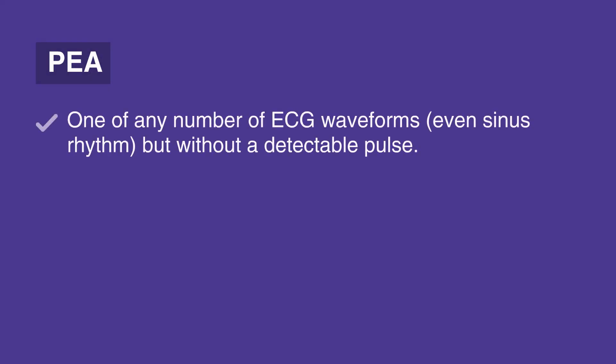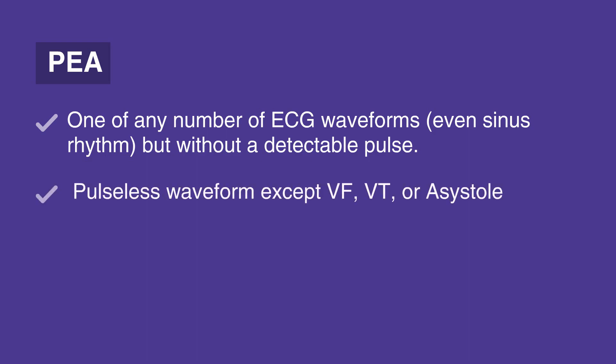PEA is one of any number of ECG waveforms, even sinus rhythm, but without a detectable pulse. PEA may include any pulseless waveform except VF, VT, or asystole.